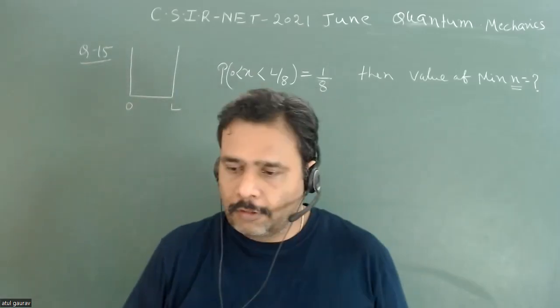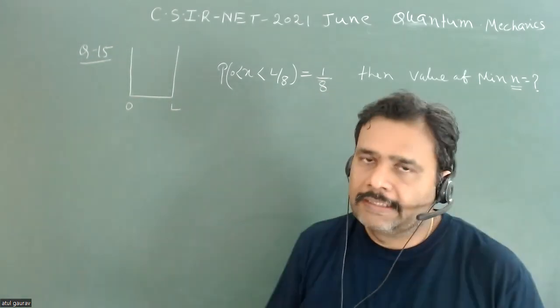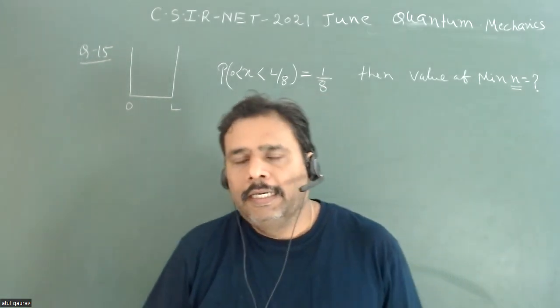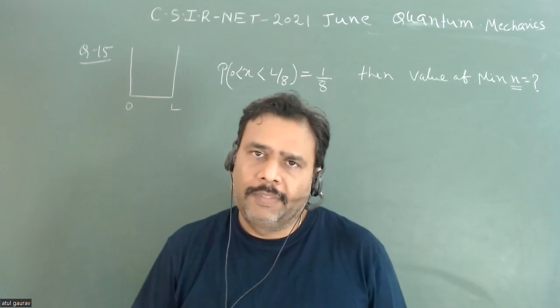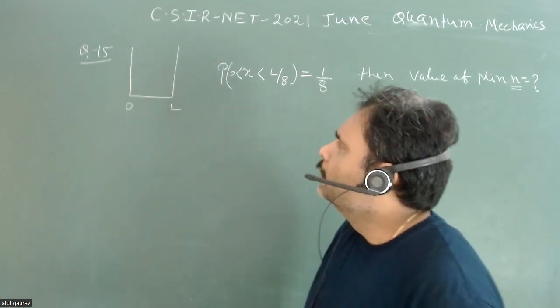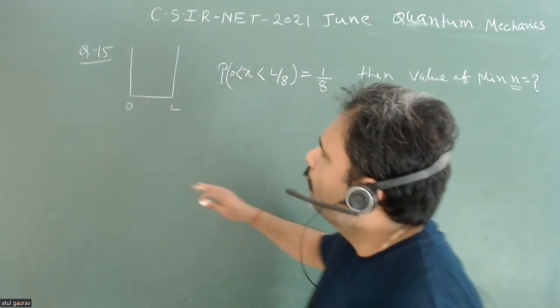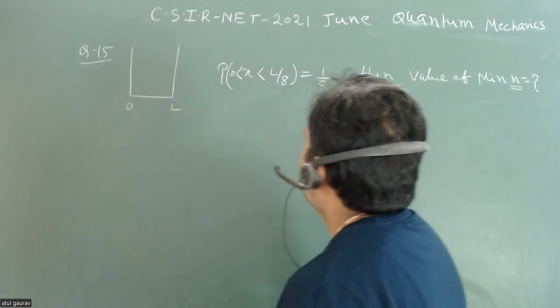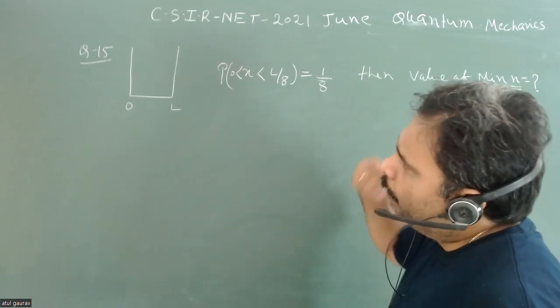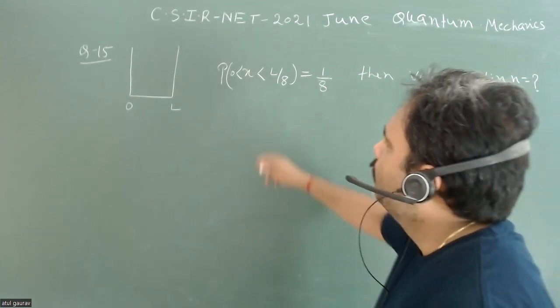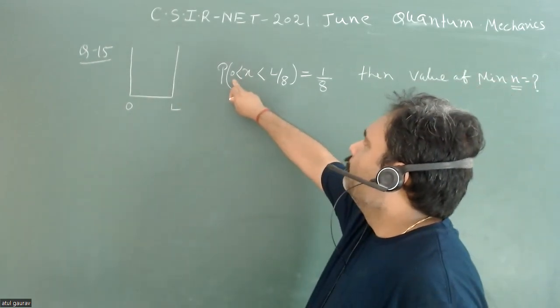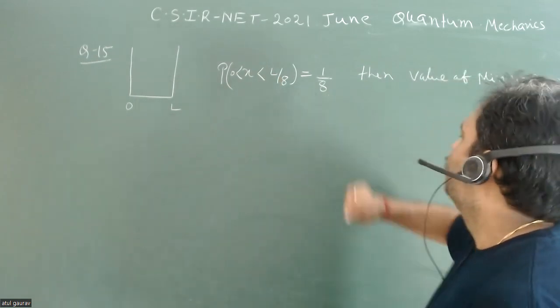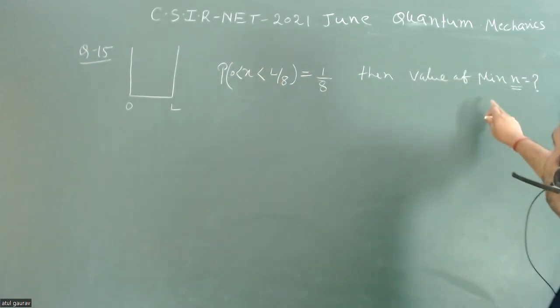Hello students, let's try to solve one more problem from CSIR NET 2021, and this is from quantum mechanics - a particle in the box. In this problem, a particle is confined in a one-dimensional box between 0 to L, and it is given for one particular energy state the probability to find the particle between 0 to L/8 is 1/8. Then we have to find the minimum value of n, where n is the quantum number associated with the energy.